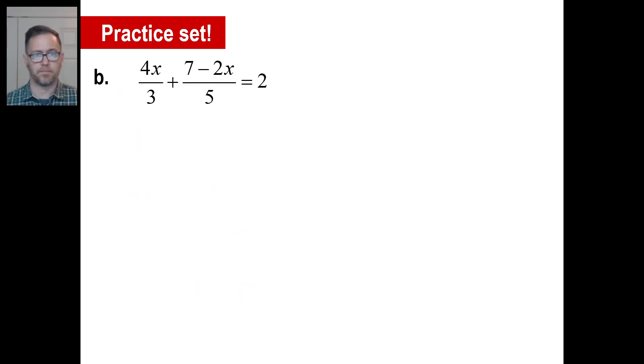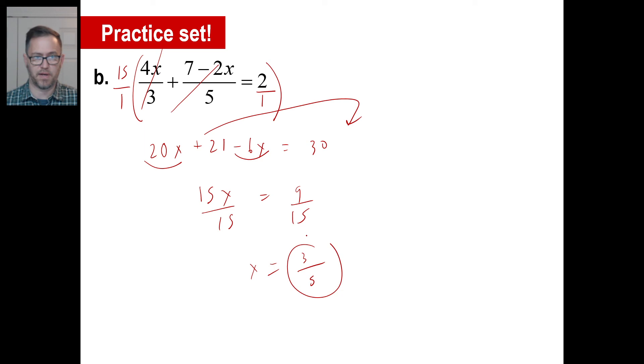Pause it and try B. This is different because it lacks a denominator. You stick it in there. Common denominator is obviously 15. The first one will be multiplying by 15 over three is five. Five times 4X is 20X. If 15 over five is three, I'll have a three times a seven, 21. And three times negative 2X. That's negative 6X. The last one will be 15 times two is 30. 20X minus 6X is 15X. Moving the 21 over 30 minus 21 is nine. If you divide it by 15 divided by 15, X will be nine over 15, which reduces to three over five. There you go.